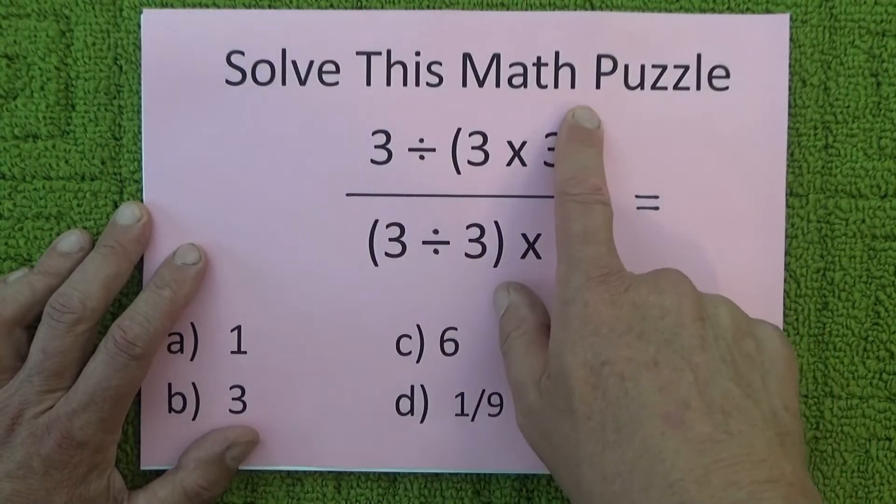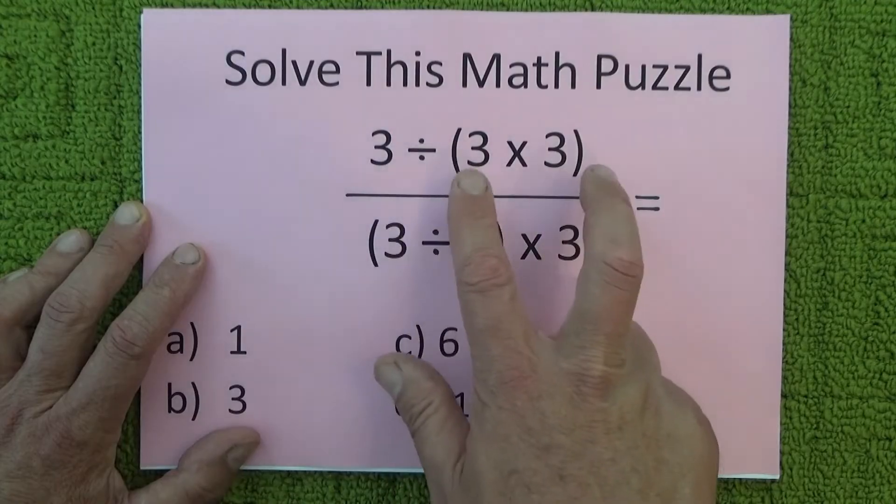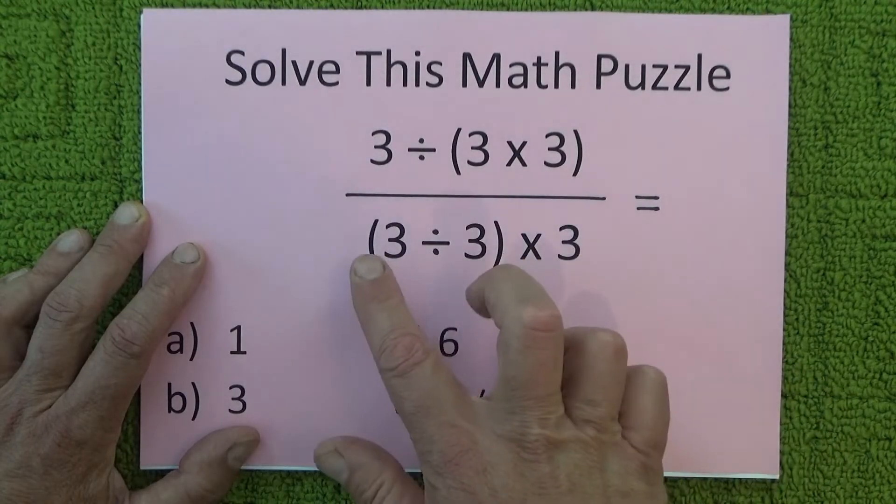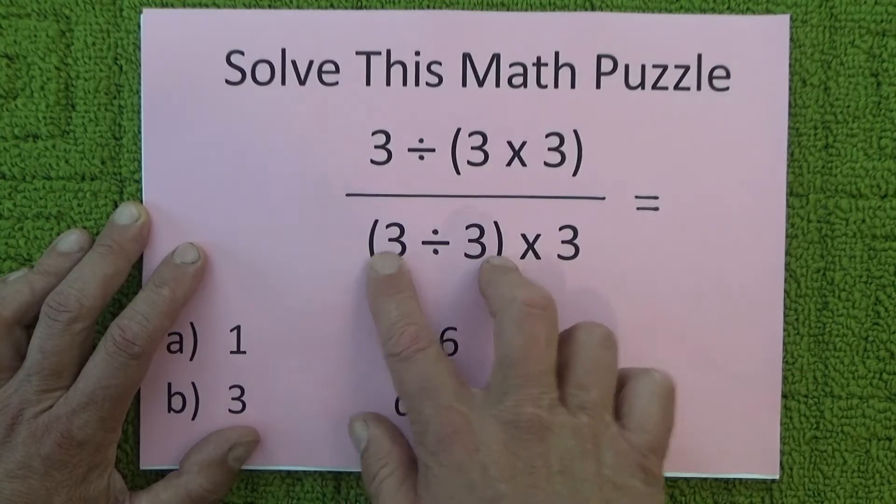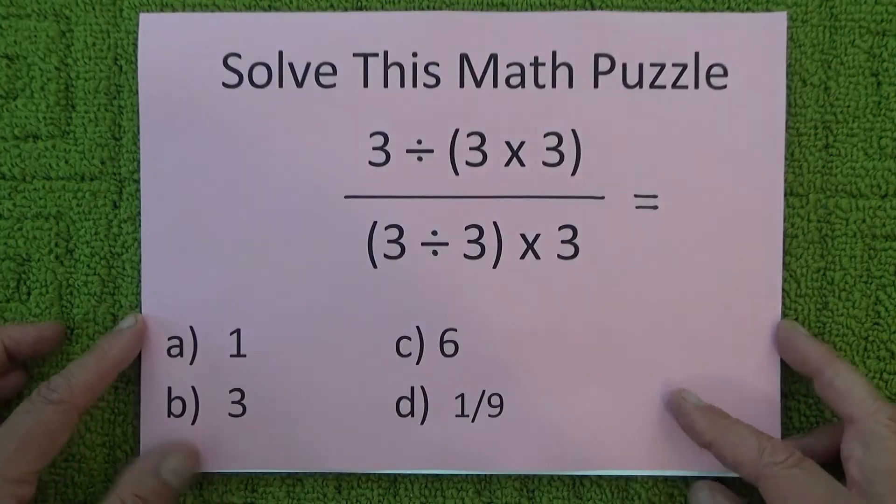Hello, today I'm going to share with you this great maths puzzle which is 3 divided by (3 times 3), and that is over (3 divided by 3) times 3. And then I've given you four options for the answer.